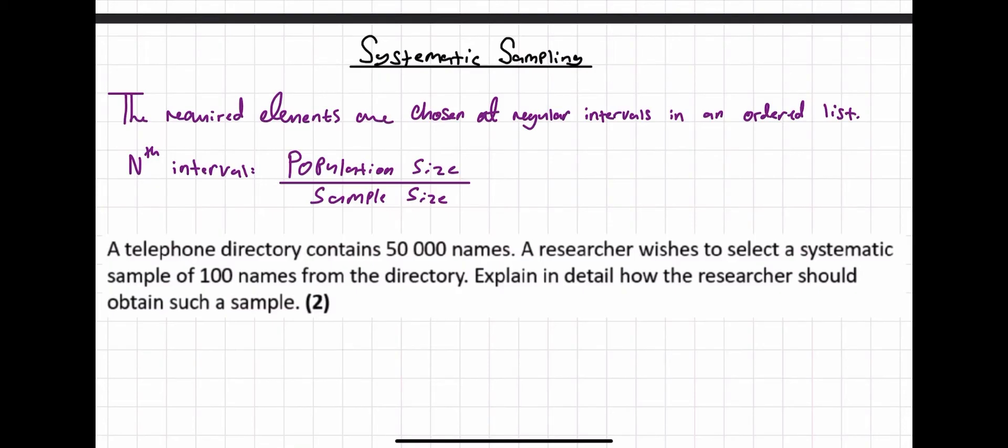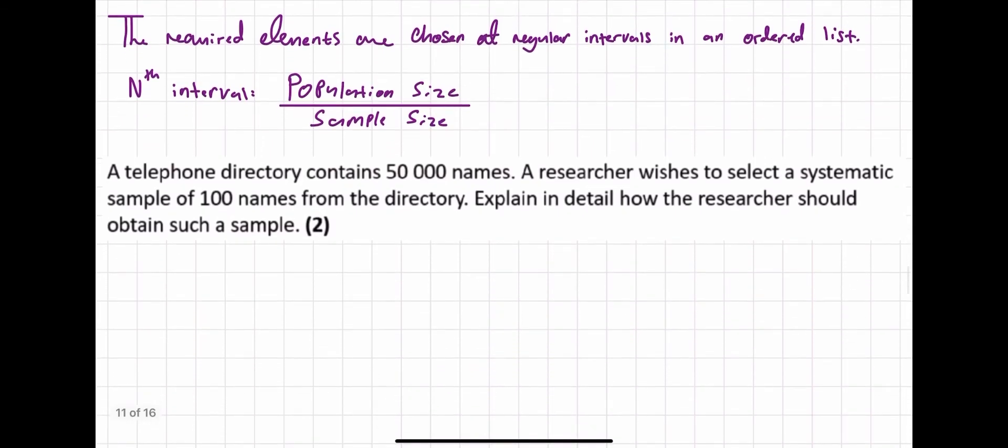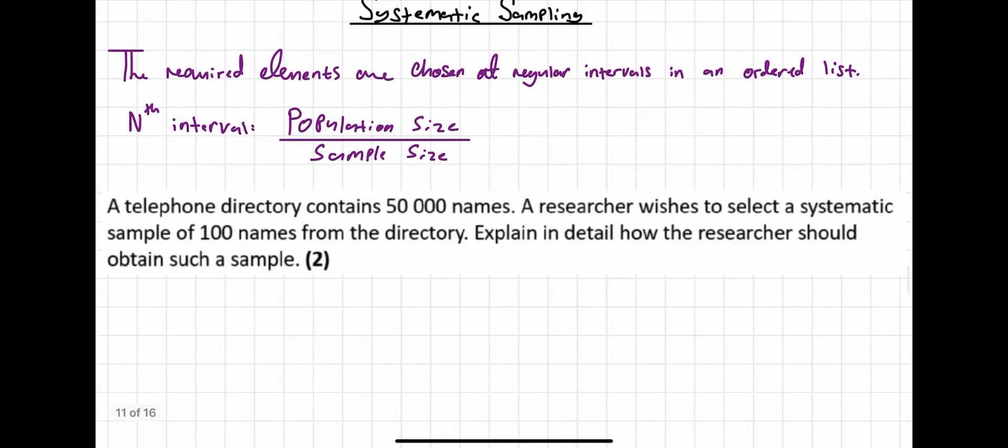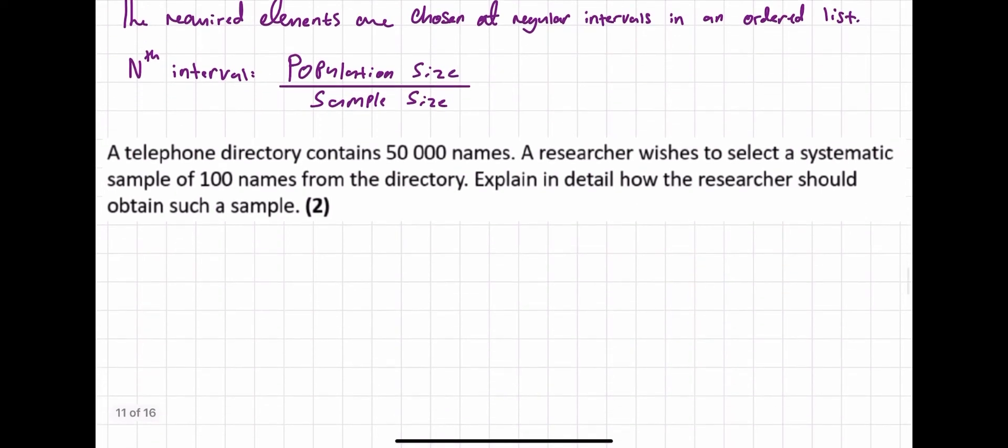So, a telephone directory contains 50,000 names. A researcher wishes to select a systematic sample of 100 names from the directory. Explain in detail how the researcher could obtain such a sample.